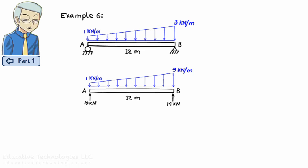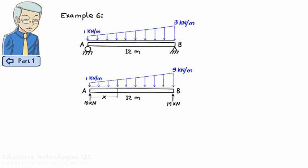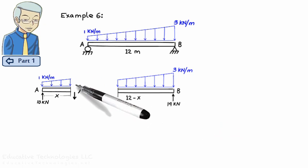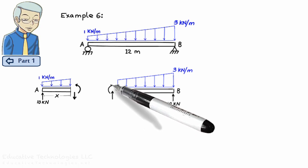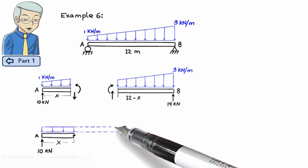Similar to the previous example, in order to find the shear and moment equations for the beam, we're going to cut the beam at an arbitrary distance x from the left end of the beam. For simplicity, let's divide the trapezoidal load into a rectangular one and a triangular one.